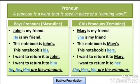Let's go to the right-hand side: girls' pronouns — feminine. Mary is my friend. Mary is the name of a girl, so in place of Mary, we cannot write 'he is my friend.' Because Mary is a girl, we use 'she' — She is my friend. For John we use 'he'; for Mary we use 'she.' These words are used in place of a noun, so they are called Pronouns.